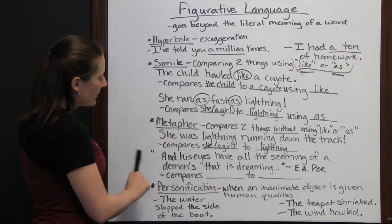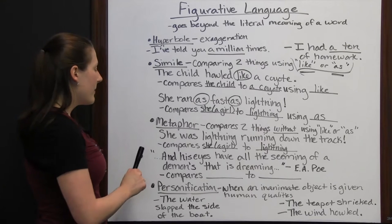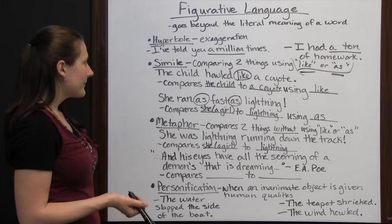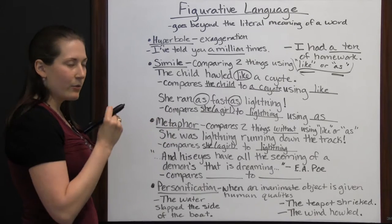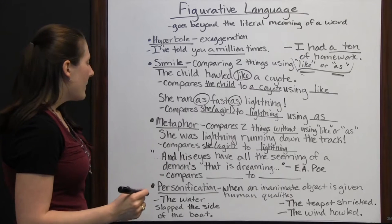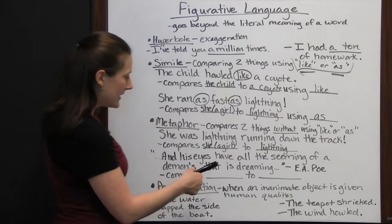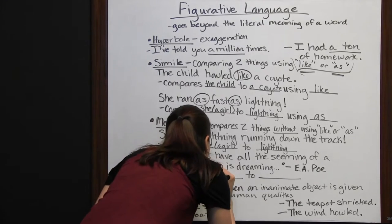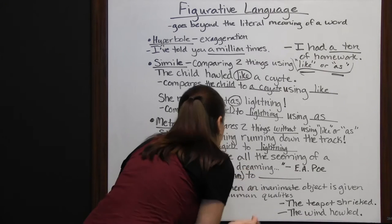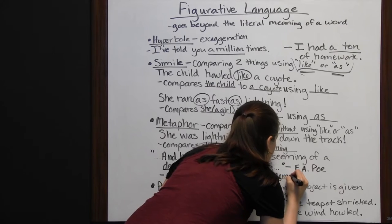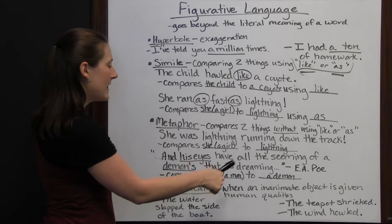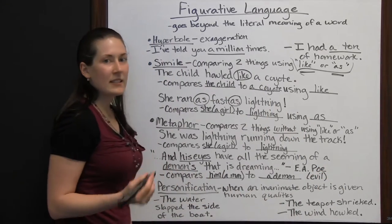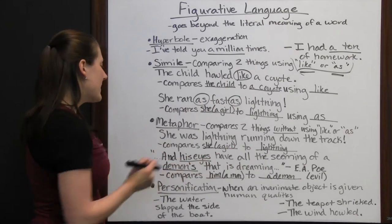Here's an excerpt from Edgar Allan Poe's poem The Raven: "his eyes have all the seeming of a demon's that is dreaming." This one's a little trickier. We're comparing his eyes to a demon's eyes — basically comparing him, a man, to a demon. If his eyes are like a demon's eyes, then this man is being compared to a demon, which may suggest that the man is evil. It doesn't mean he's literally a demon; it means he's got some characteristic of a demon — he's maybe an evil person.